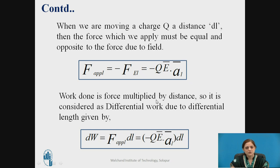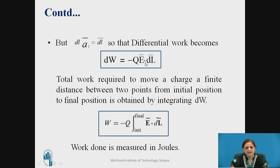Work done is force multiplied by distance. So it is considered as a differential work due to differential length is given by dW, whereas dW is known as the differential work or incremental work, given by force applied into DL. So by putting the above equation in this equation, you are getting minus QE bar dot AL bar into DL. Any vector which having the magnitude as well as the direction denoted with this DL bar. Therefore, DL AL bar can be written as DL bar, whereas DL bar is the differential length in vector form. So differential work becomes dW equal to minus QE bar dot DL bar.